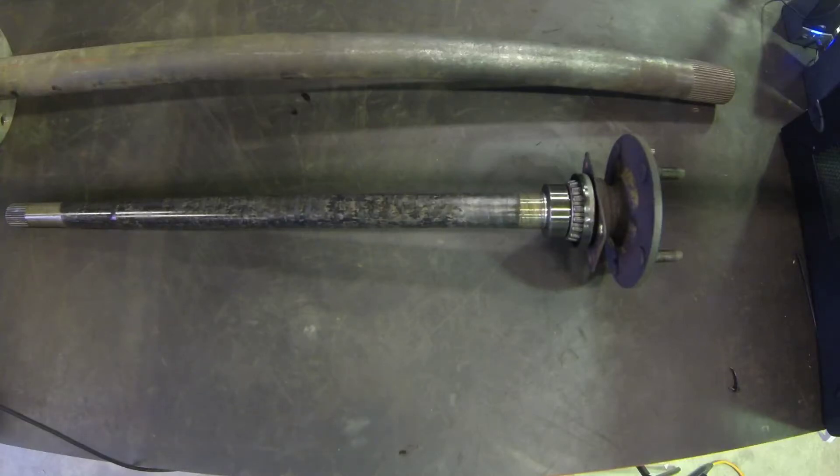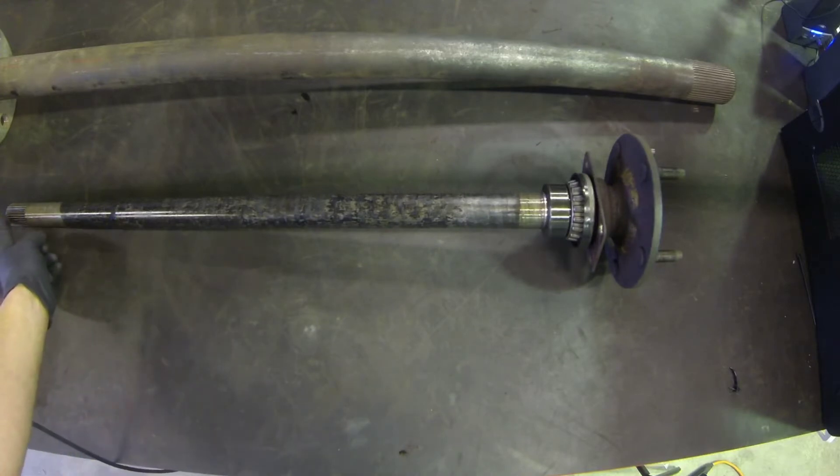Taking a look at semi-floating and full-floating axles, what we can see in front of us here is a semi-floating axle shaft where one side of the axle shaft will be splined to the axle side gear in the differential.